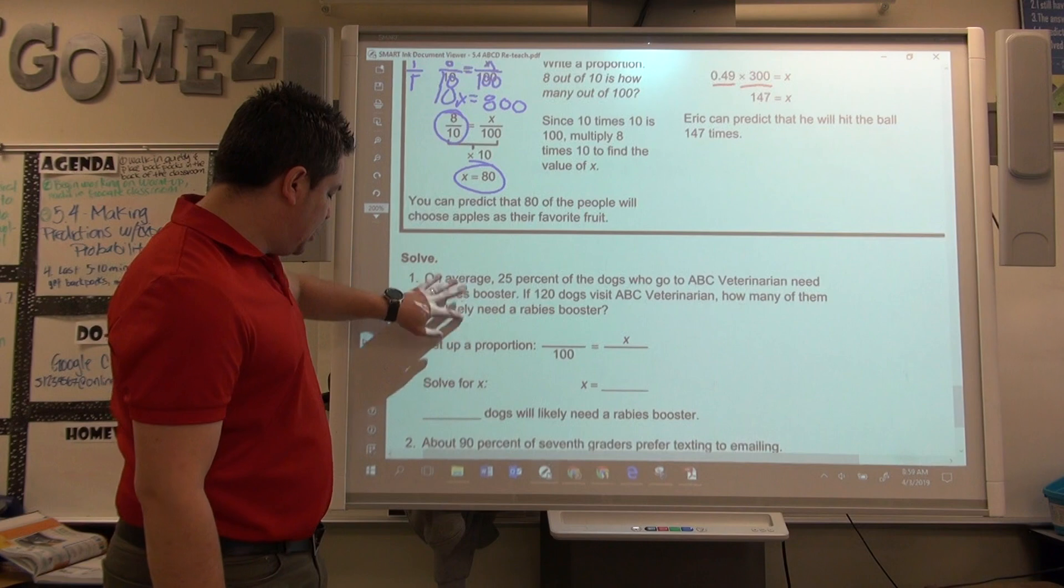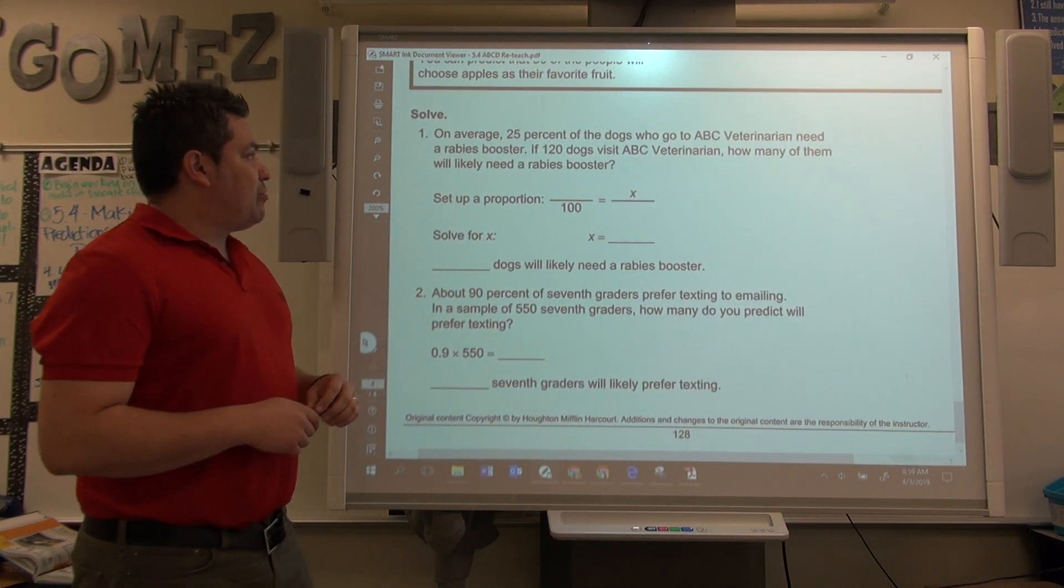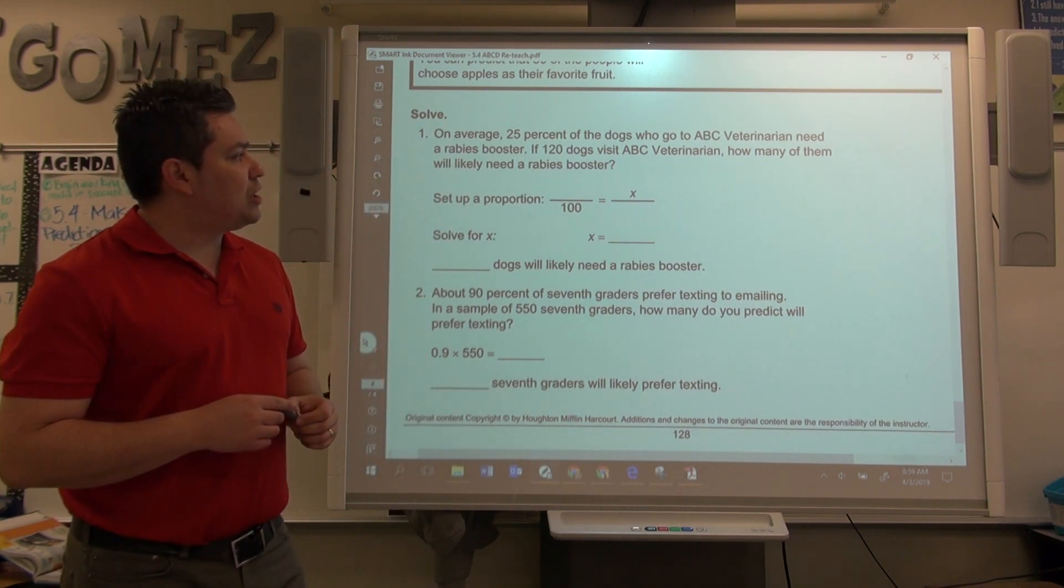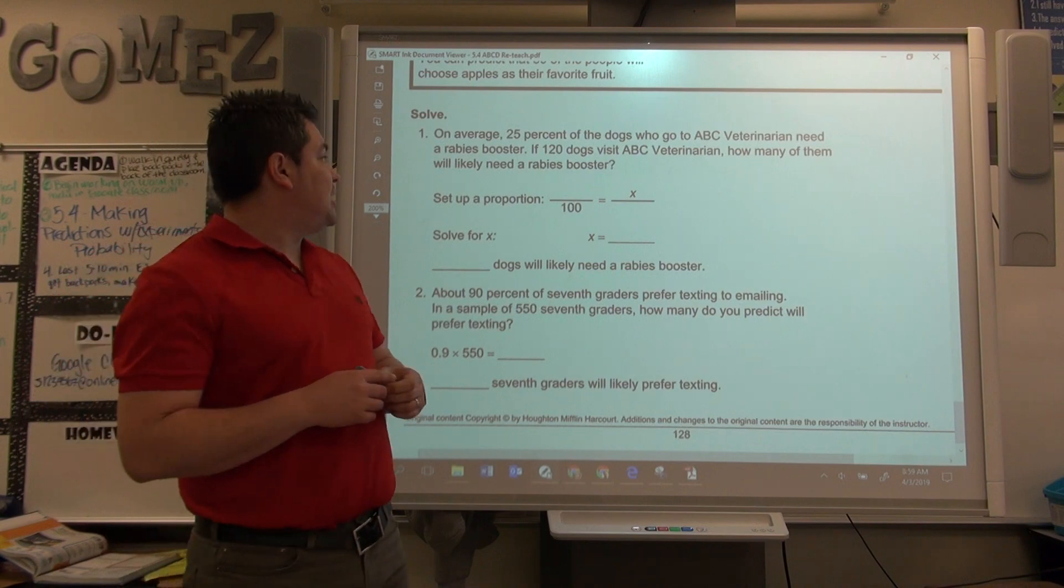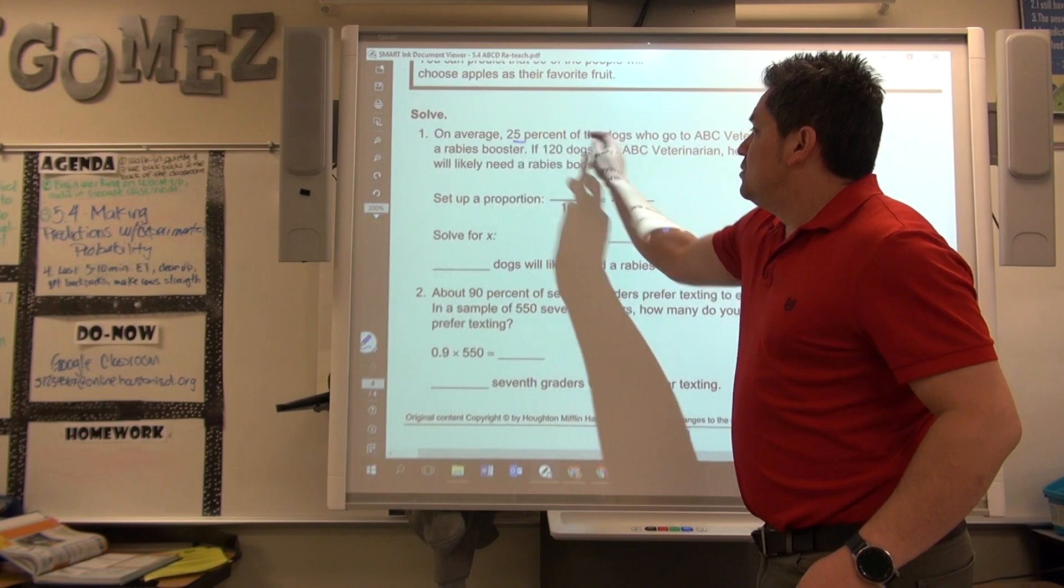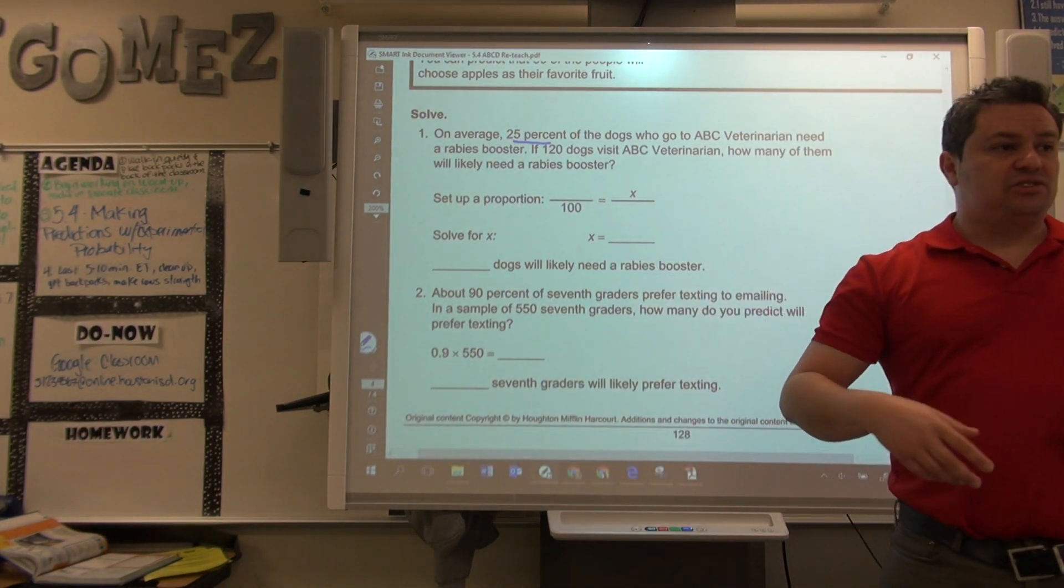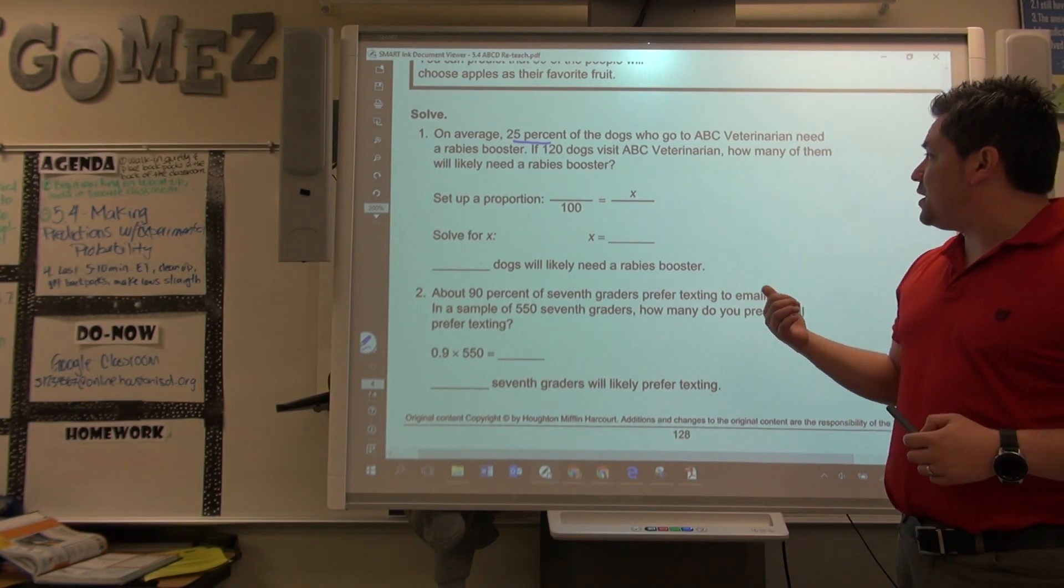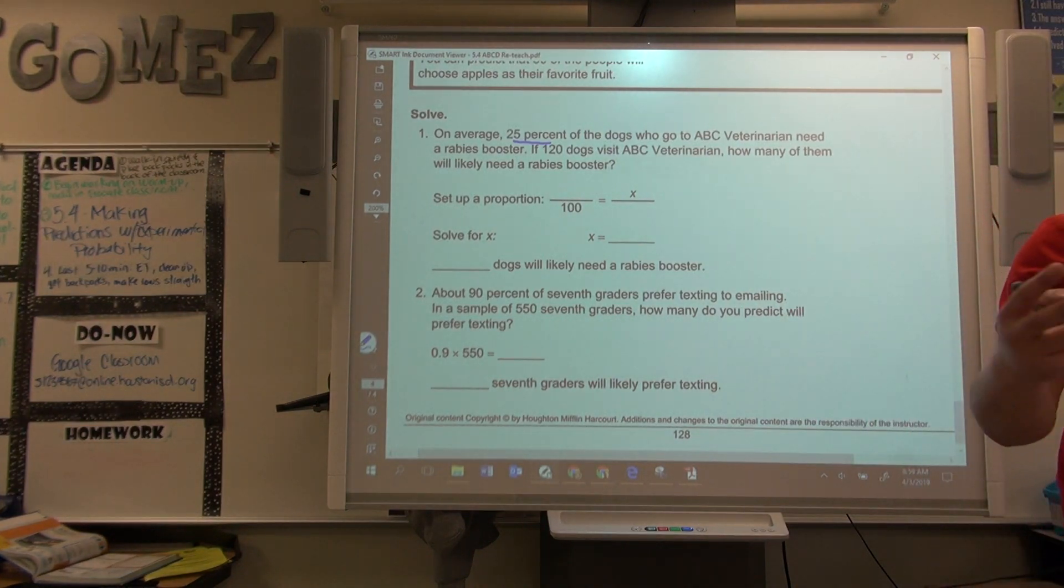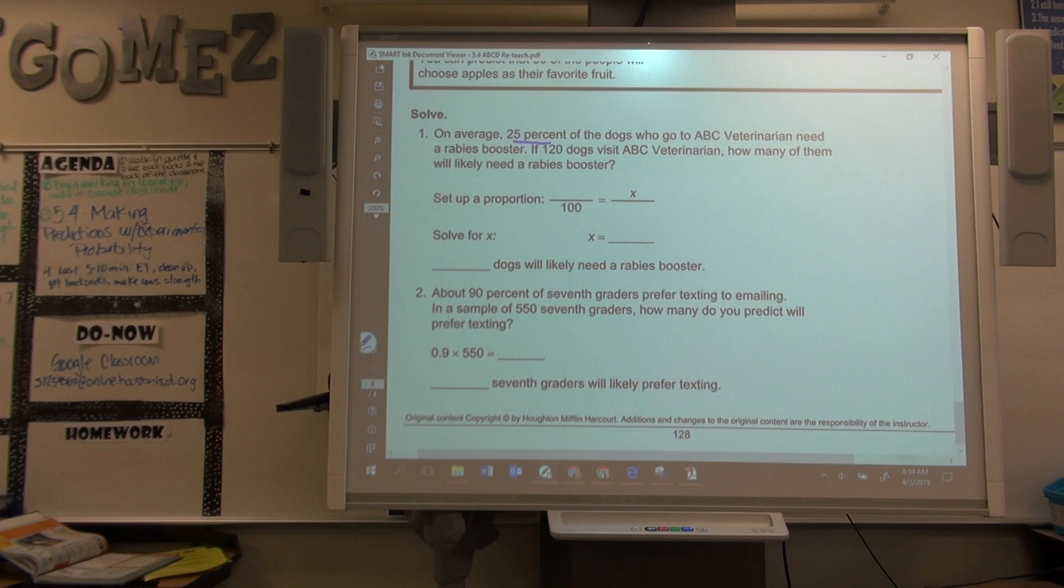Let's look at the example that we have over here. I think we have two examples. On average, 25% of the dogs who go to ABC Veterinary need a rabies booster. If 120 dogs visit the veterinary clinic, how many of them will more likely need a rabies booster? So, you can do this two ways, and I'm actually going to show you both ways.